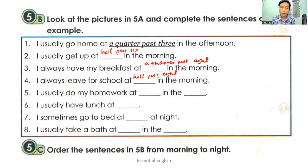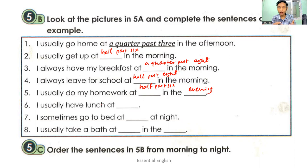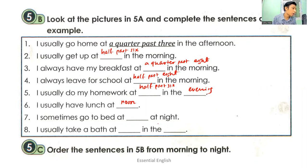For number five: I usually do my homework at half past six in the evening. Number six: I usually have lunch at noon — you have to say 'noon', not just '12 o'clock'. Number seven: I sometimes go to bed at a quarter to ten at night — A-Q-U-A-R-T-E-R to ten.